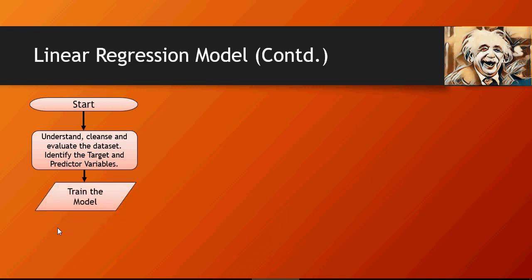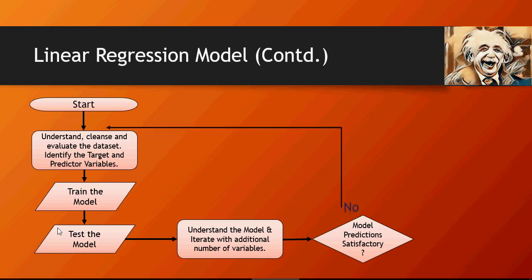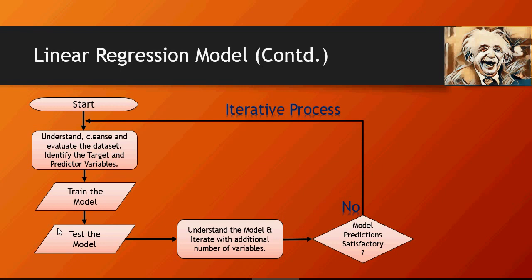Next, build and train a model, test the model, and see how accurate it is. Iterate with additional variables — for example, start with one variable and then add multiple predictors and see how the model behavior changes. More data, more examples — the better the model will be. Then ask: are you satisfied? Is the model behaving satisfactorily, as per what you need?